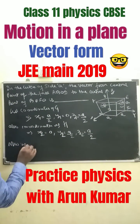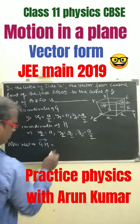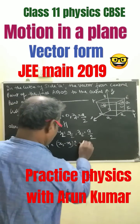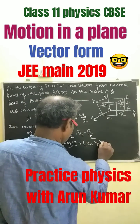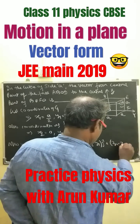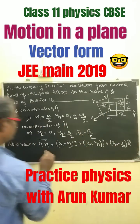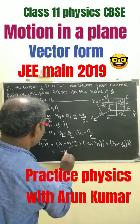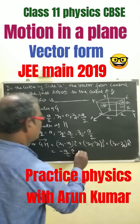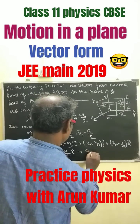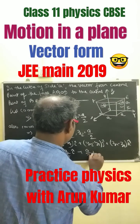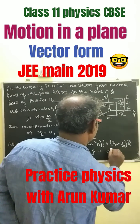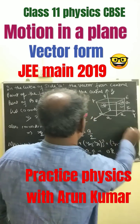Vector GH equals to (X2 minus X1) î cap plus (Y2 minus Y1) ĵ cap plus (Z2 minus Z1) k̂ cap. So X2 minus X1 is minus A/2, î cap, plus Y2 minus Y1 that is A/2, ĵ cap, plus Z2 minus Z1 equals to 0, k̂ cap. Therefore, this is the vector equation.